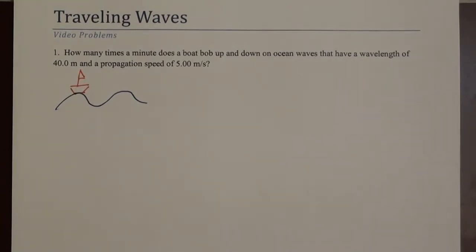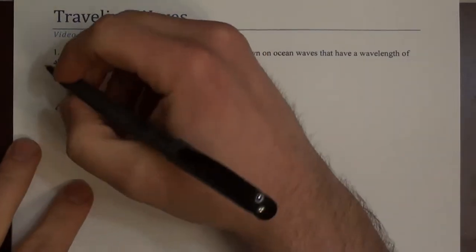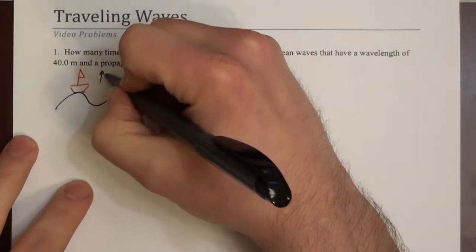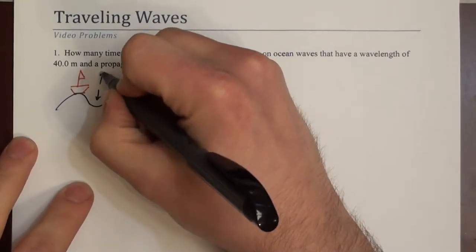The boat bobs down, and then the wave passes further and the boat bobs back up. So the boat is moving up and down in this way. That's what we mean by bob.